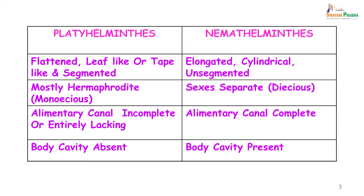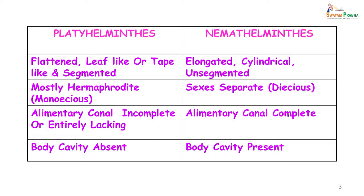Now how do Platyhelminthes differ from Nemathelminths? For one thing they are flat and not cylindrical. They are mostly hermaphrodites, that is monoecious. They lack an alimentary canal, or the alimentary canal may be incomplete, and they do not possess a body cavity.